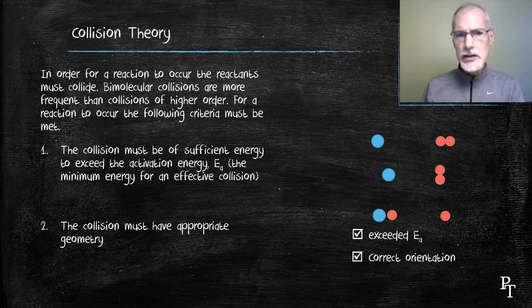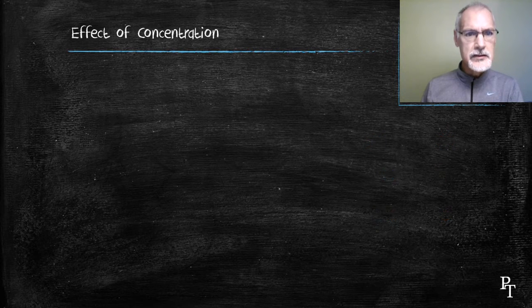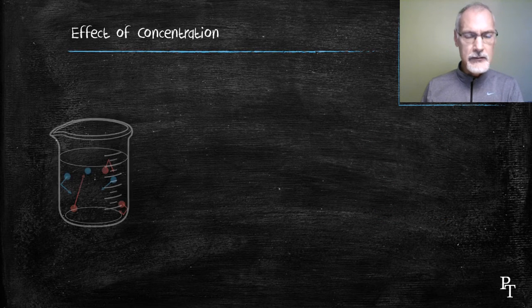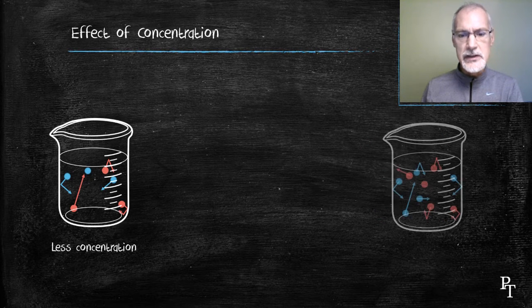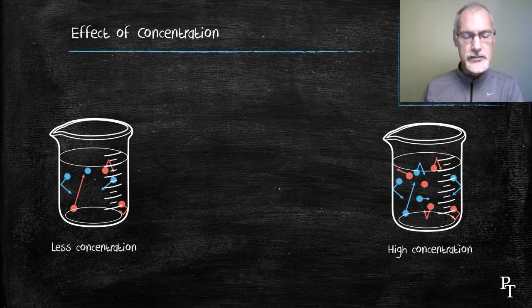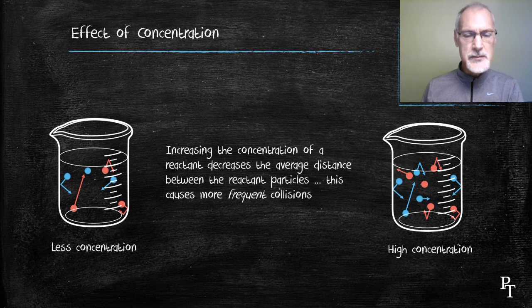We're going to look at factors that might affect this rate of reaction. First, let's consider concentration. Here we have low concentration and in the second beaker, a higher concentration. Increasing concentration reduces the distance between my particles.